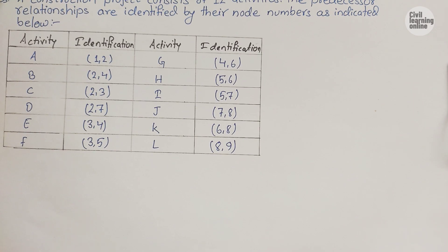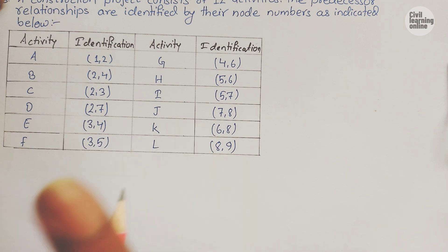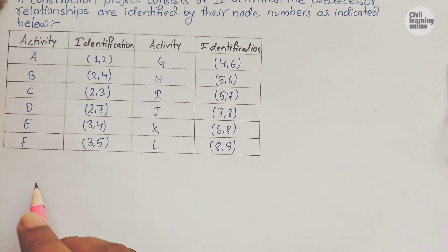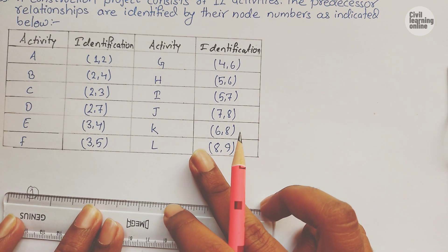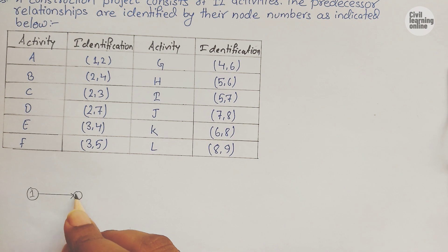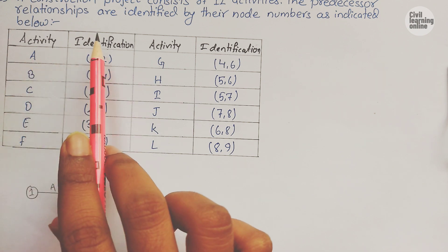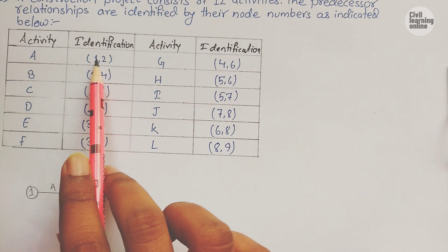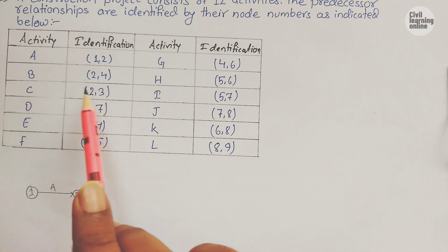While solving the numerical in exam, try using a pencil. First, activity A begins with an event and ends with an event. We draw a circle to denote an event — here it is node 1, and activity A terminates at event 2. So this is our event 2 and this is activity A. Activity A has nodes 1 and 2.